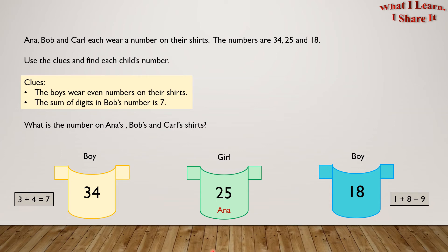So which shirt has 7 as the result of both the digits added? Yes, shirt number 34.